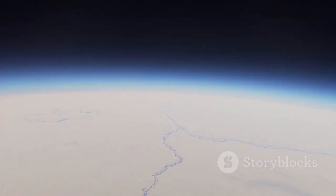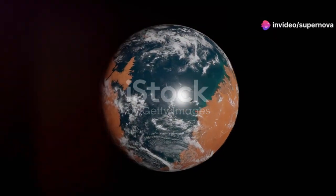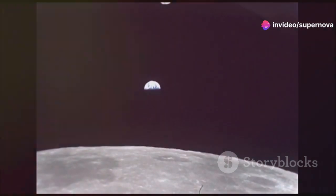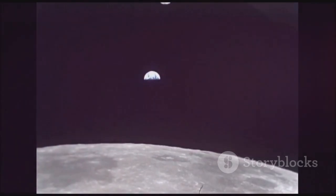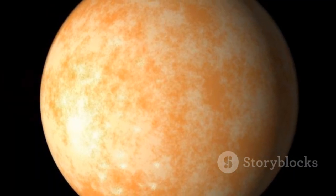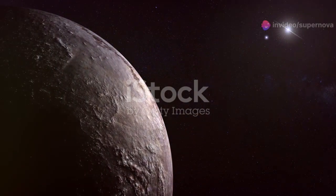Another challenge is the possibility of tidal locking. Because Proxima b is so close to its star, it might be tidally locked. This means that one side of the planet always faces the star, just like one side of the moon always faces Earth. Tidal locking could lead to extreme temperature differences between the two sides of the planet, making it difficult for life to thrive.